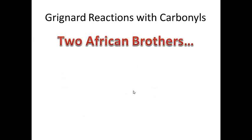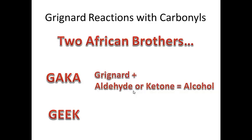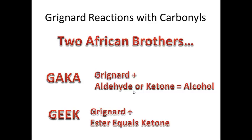To remember this, here's a mnemonic: think of two names — GAKA and GEEK. GAKA means Grignard plus an aldehyde or ketone equals an alcohol. GEEK means Grignard plus ester equals ketone. If you remember those two terms, when you see the reagents you'll be able to predict the products with no problem.